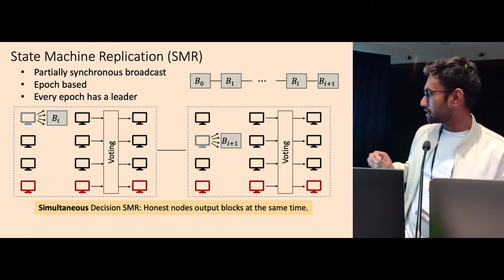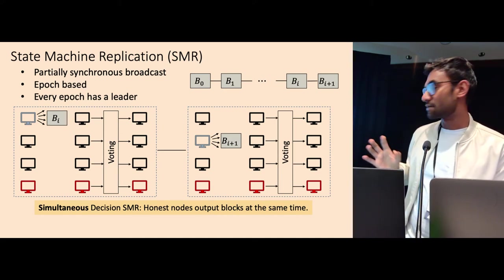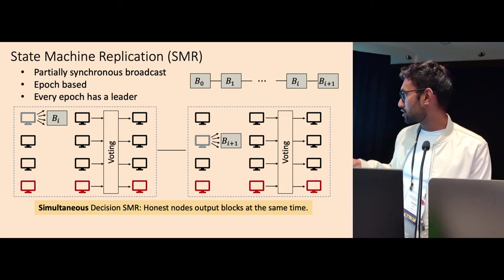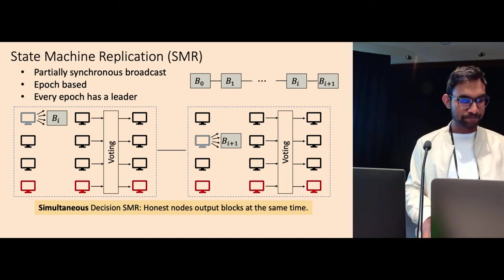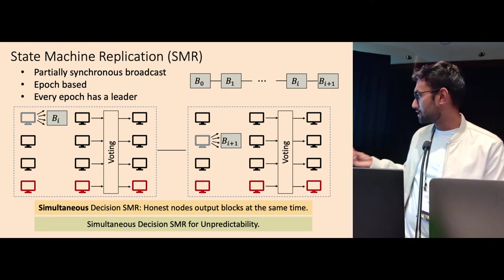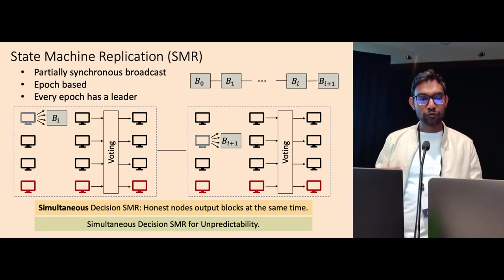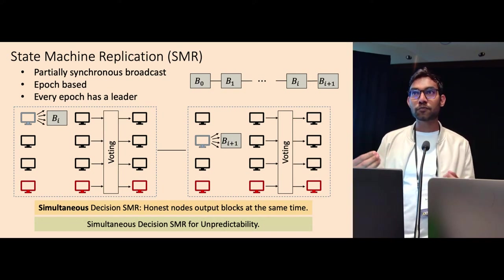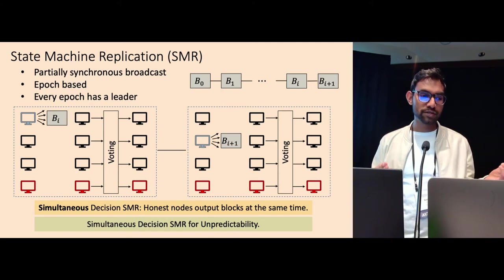So one property that we need from SMR, we need a simultaneous decision SMR, that means that if one honest node outputs, then everybody outputs almost immediately. So we need this simultaneous decision property for unpredictability. The intuition is that we don't want the adversary to learn the beacon output too far ahead of honest nodes. We want to ensure that as soon as adversary learns the beacon output, then everybody else also learns almost immediately.